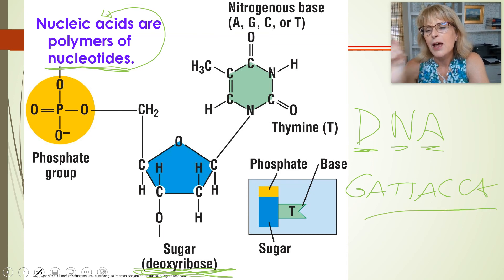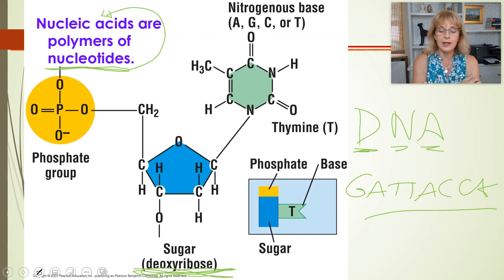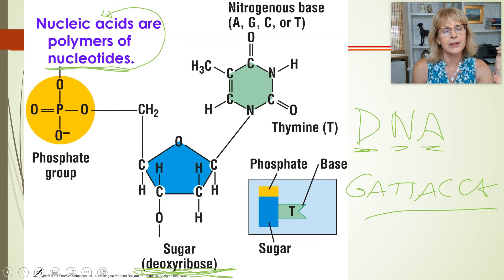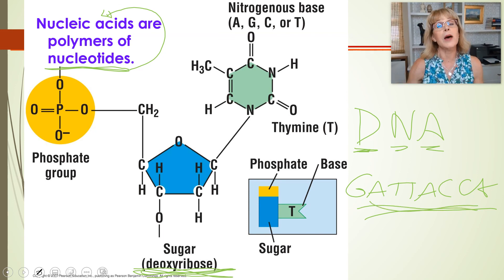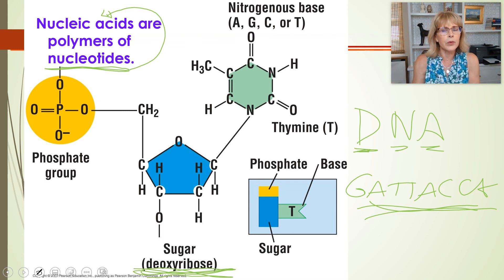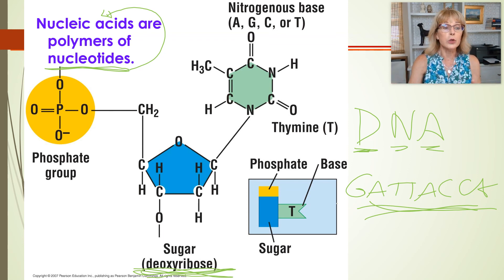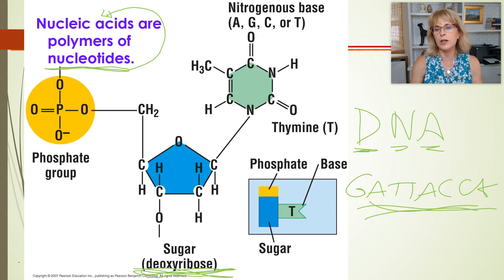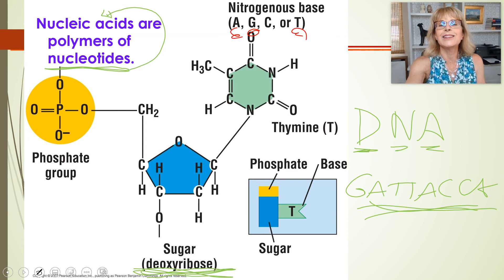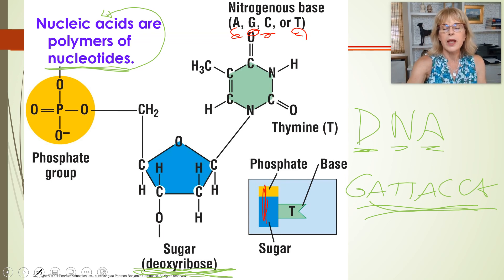The bases are remembered as GATTACA — there was a movie called Gattaca, starring Uma Thurman, Jude Law, and Ethan Hawke. The movie was about a science-fiction future where your DNA was your destiny: if you wanted to get hired by a company, they would take a sample of your DNA to decide. The film was named 'Gattaca' because if you look at a strand of DNA, it's lots of G's, A's, T's, and C's.